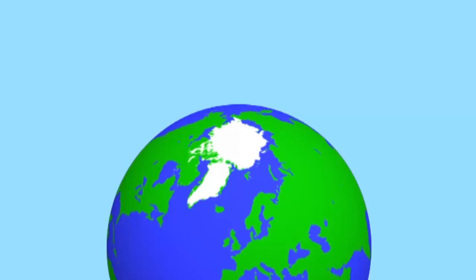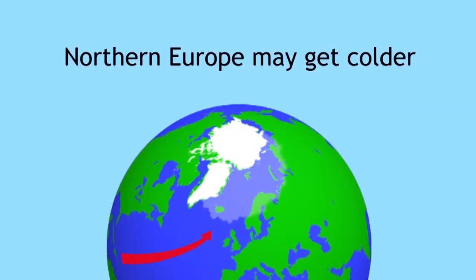Some models suggest, for example, that the Gulf Stream which keeps Western Europe relatively warm in winter may not reach so far north. As a result of this, northern Europe may actually get cooler as the planet warms.